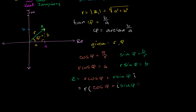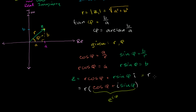Now, if you've seen the Taylor series videos in the calculus playlist, this is one of the most profound results in all of mathematics — it still gives me chills. This is Euler's formula. By looking at the Taylor series representations of e to the x, cosine of x, and sine of x, we can show that r times (cosine of phi plus i sine of phi) is equal to r times e to the i phi. So z equals r times e to the i phi.